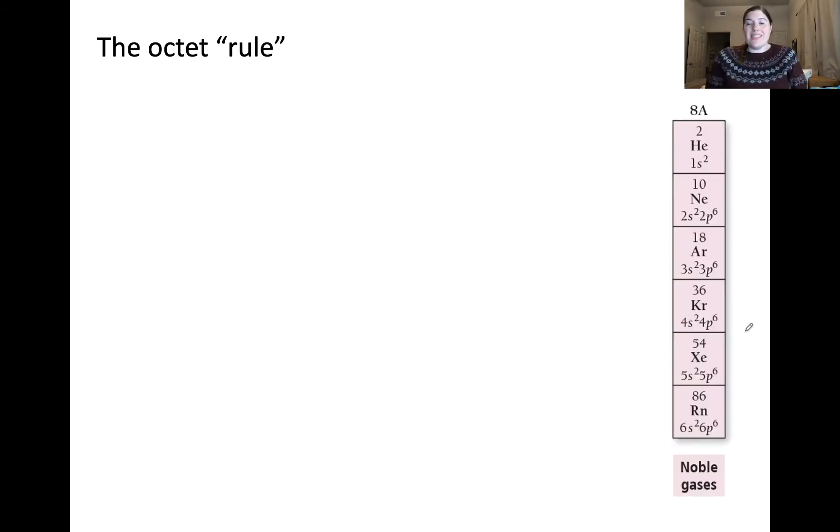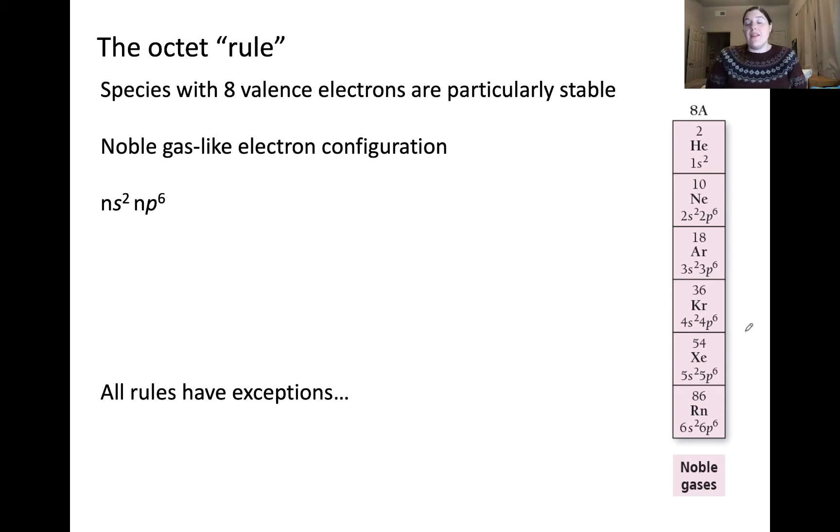Let's look at the noble gases in some more detail. You may have heard of this concept of the octet rule before. And the octet rule states that species with eight valence electrons tend to be particularly stable. The reason for this is because they have a so-called noble gas-like electron configuration. If we look at this in more detail, all of these noble gases, with the exception of helium, have an electron configuration shown underneath as generally NS2 NP6. N is the principal quantum number and may and will vary as we move down the column.